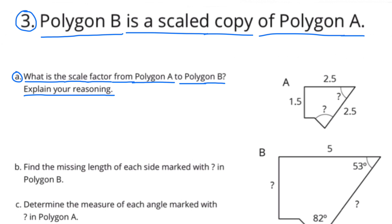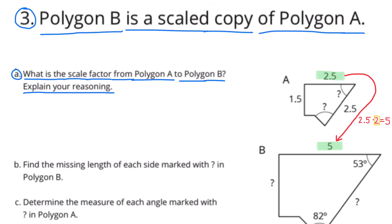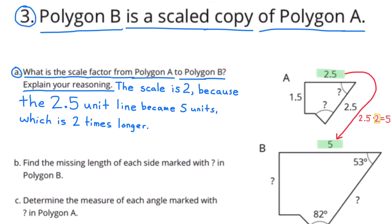Number 3. Polygon B is a scaled copy of polygon A. Part A: What is the scale factor from polygon A to polygon B? The side length of 2 and 5 tenths from polygon A increased to a side length of 5 on polygon B, and that increased by a factor of 2, because 2 and 5 tenths times 2 equals 5. The scale is 2, because the 2.5-unit line became 5 units, which is 2 times longer.